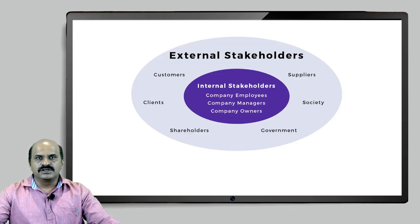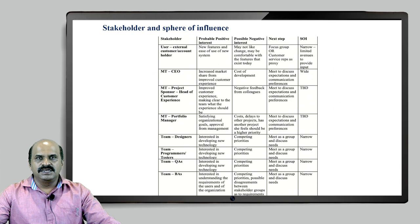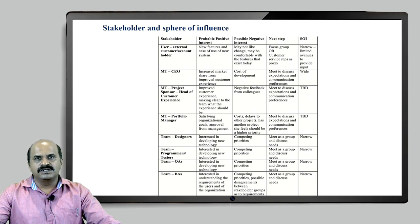There are two types of stakeholders in a project: internal stakeholders, which include company employees, company managers, and company owners; and external stakeholders, which are suppliers, society, and government. You can also see in this particular table the roles and responsibilities of each stakeholder, their sphere of influence, and how they interact throughout the life cycle of a project through stakeholder engagement plans. The stakeholder engagement plan needs to be first driven and approved from the project sponsors and promoters.